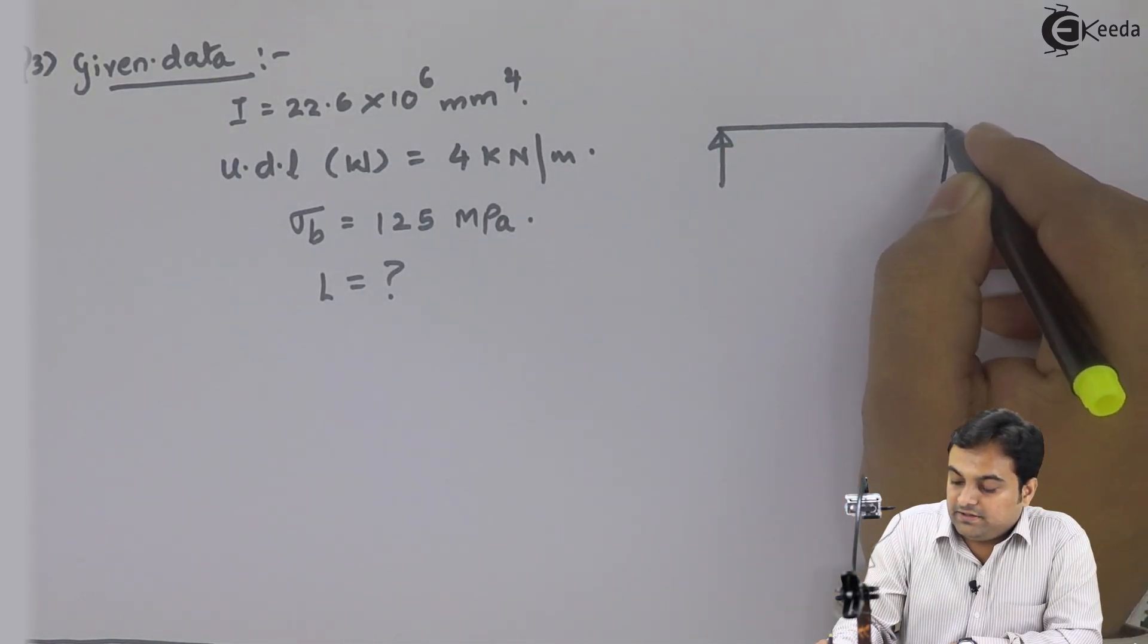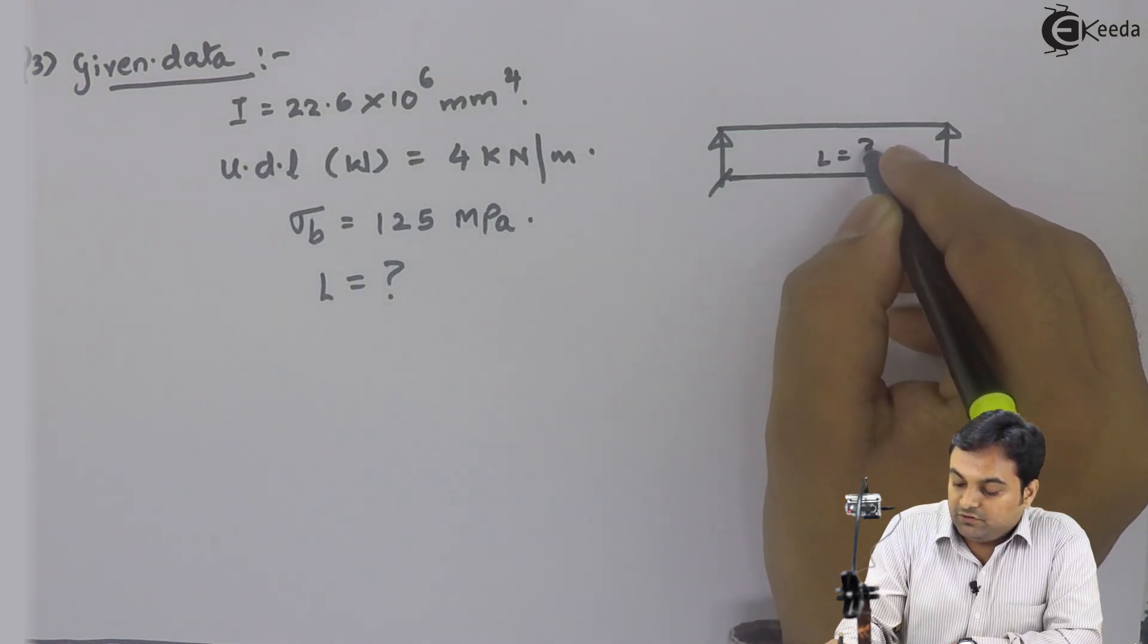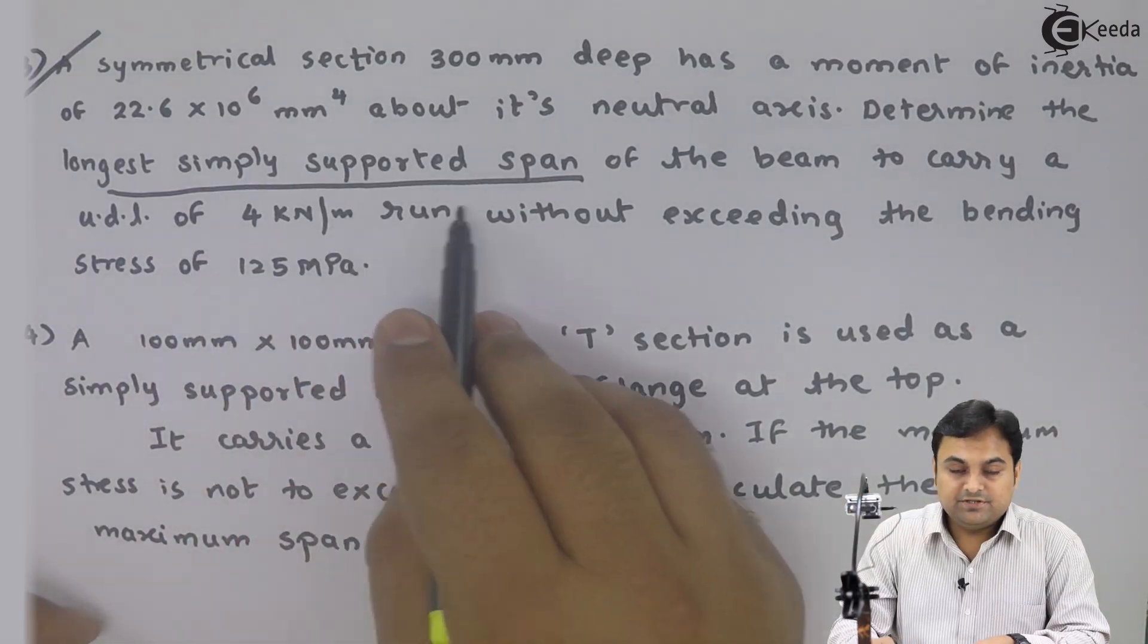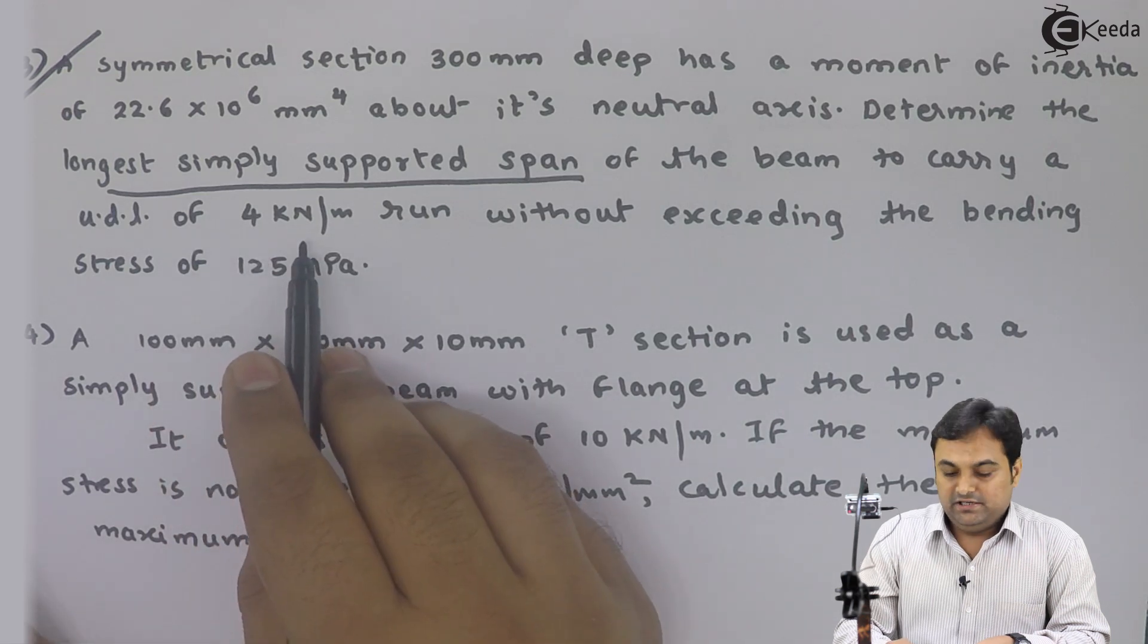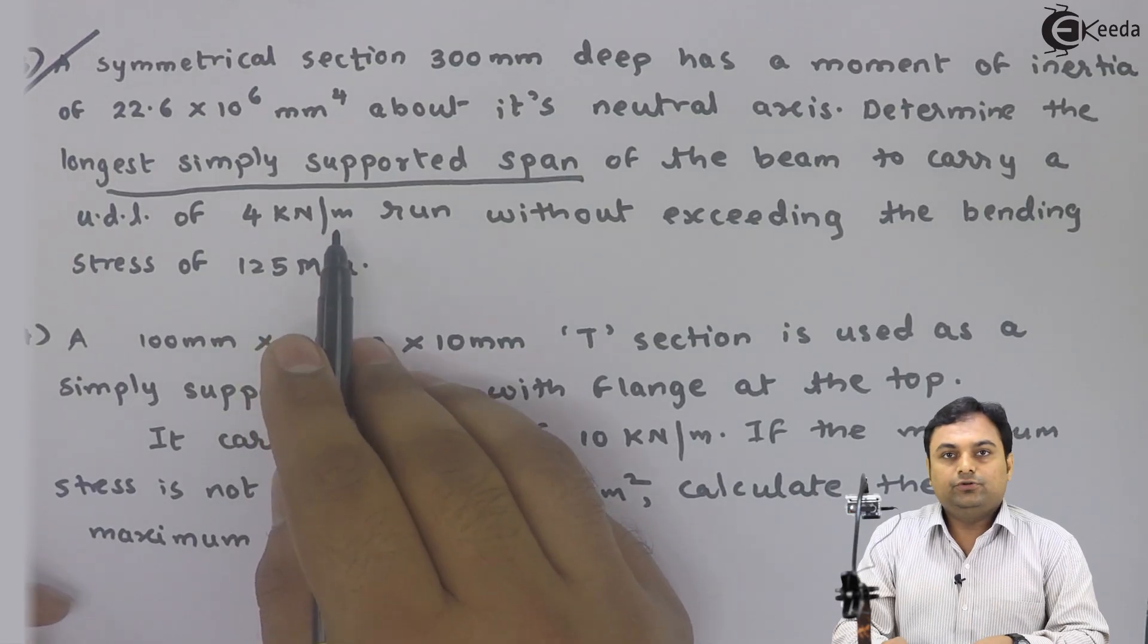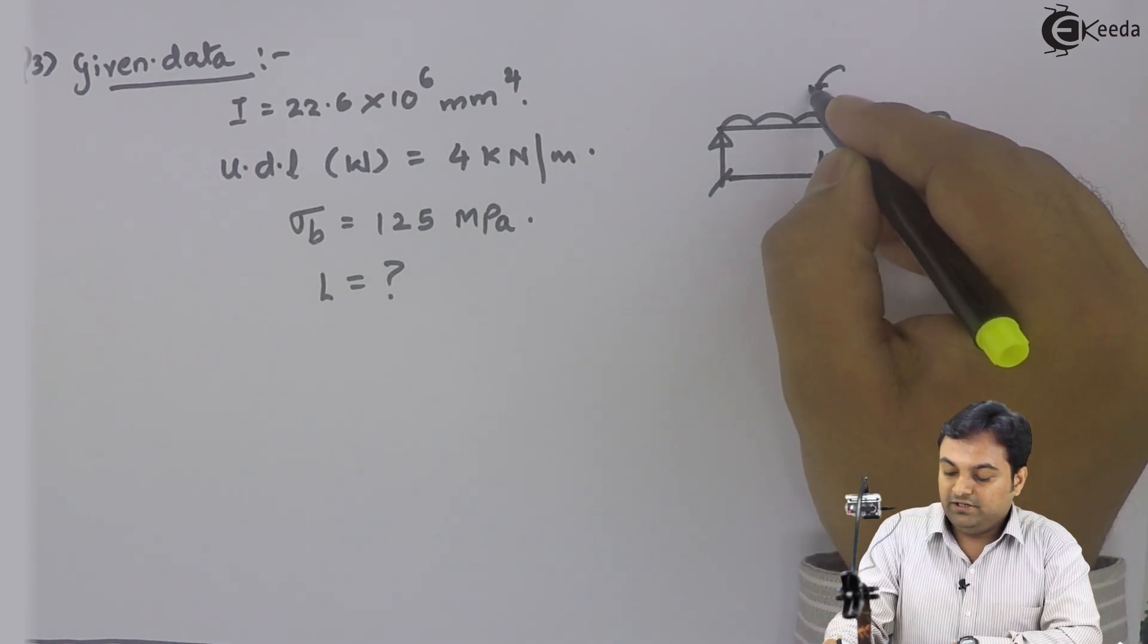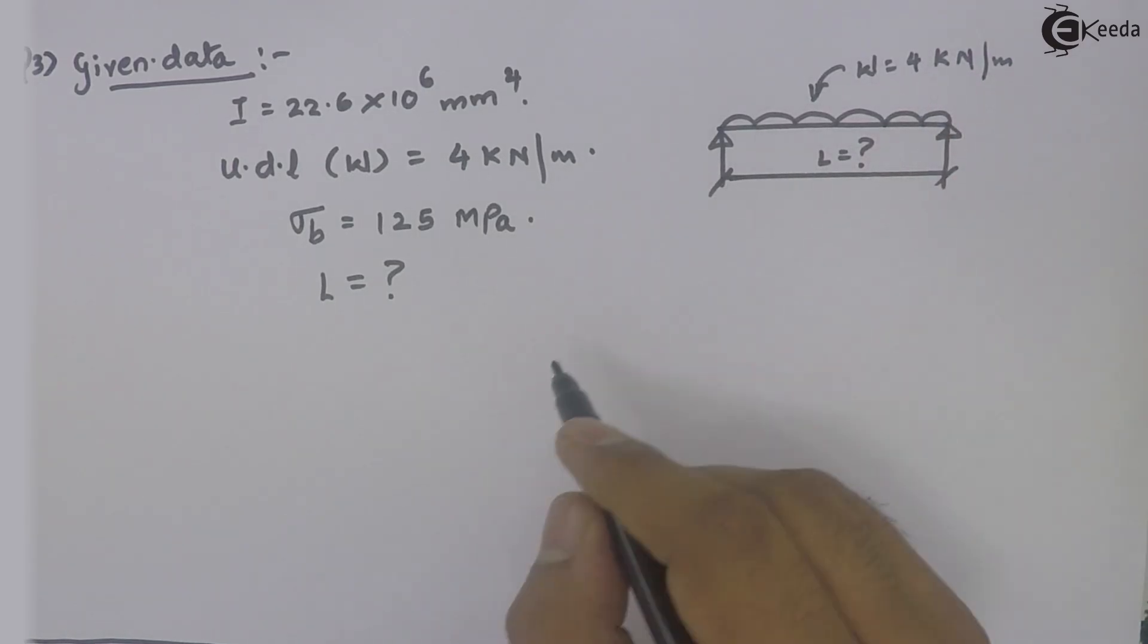Its length is what we have to calculate. And what is given? Determine the longest simply supported span of the beam to carry a UDL, meaning this simply supported beam has UDL of 4 kN per meter. This simply supported beam is having a UDL, W = 4 kN per meter.